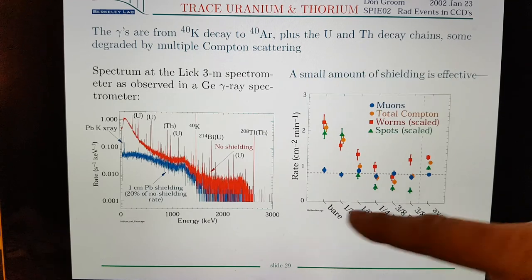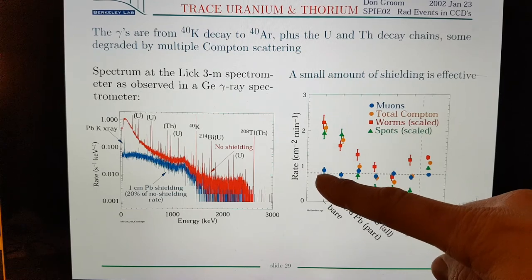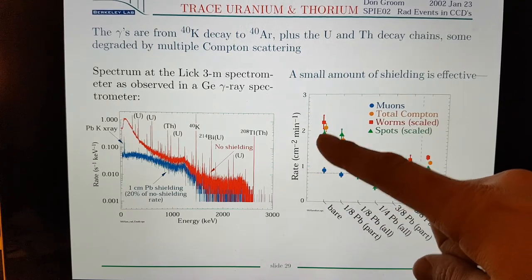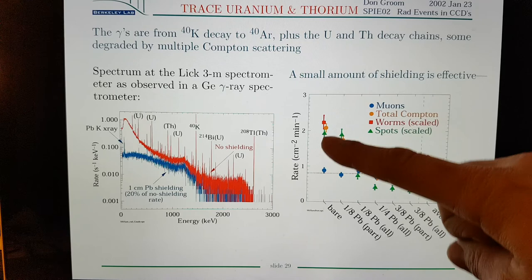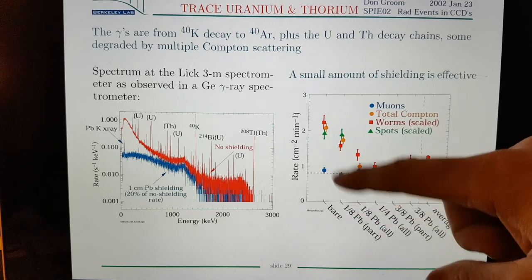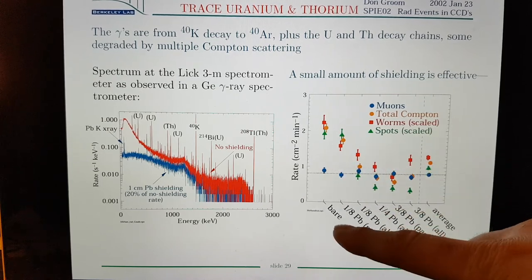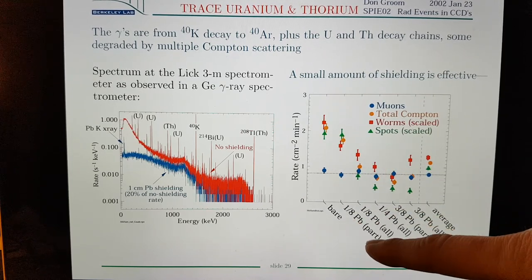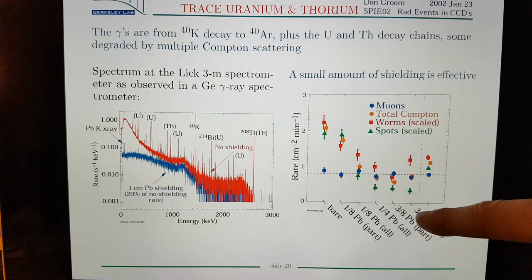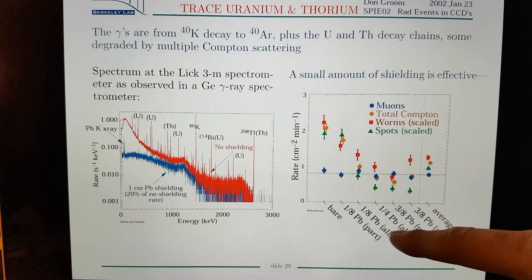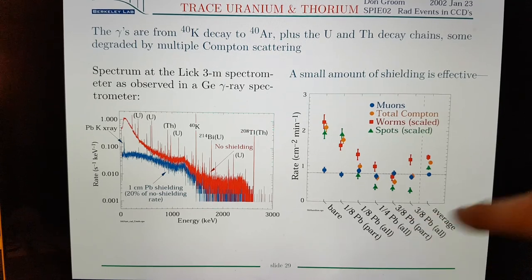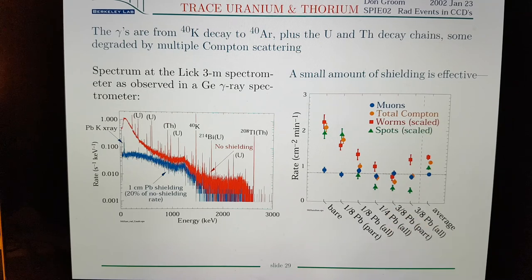Here you can see bare, you've got your muons here and you've got lots of worms and spots. You see your muons don't change but they've got bare eighth of an inch of lead all the way through to three eighths of lead. It looks like that is a pretty good figure here, three eighths of lead.